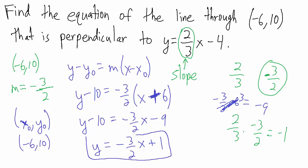So y equals negative three-halves x plus one is the equation of the line through negative six comma ten, perpendicular to y equals two-thirds x minus four. We can verify: plugging in negative six for x, negative three-halves times negative six equals positive nine, and nine plus one is ten — we get y equals ten. The slopes negative three-halves and two-thirds are negative reciprocals, confirming this is correct.